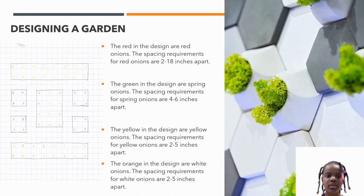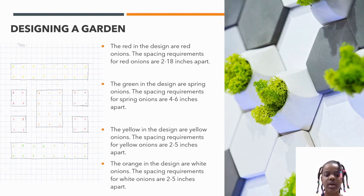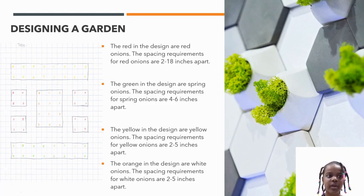Designing a Garden: The red and white divide in my design are red onions, with spacing requirements of 2-8 inches apart. The green in the design are spring onions, with spacing requirements of 4-6 inches apart. The yellow in the design are yellow onions, with spacing of 2-5 inches apart. The orange in the design are white onions, with spacing of 2-5 inches apart.